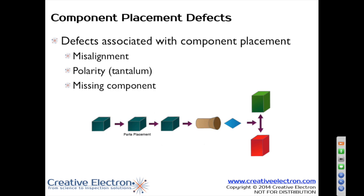We can look at polarity to a degree, but misalignment we can definitely look at with x-ray. For missing components, AOI is perfect at that. One of the drawbacks of x-ray in this portion of defect analysis is we can't see identification on the components, and we can't really see placement indicators or markings on the board. So AOI is actually a better process for looking at this type of defect.